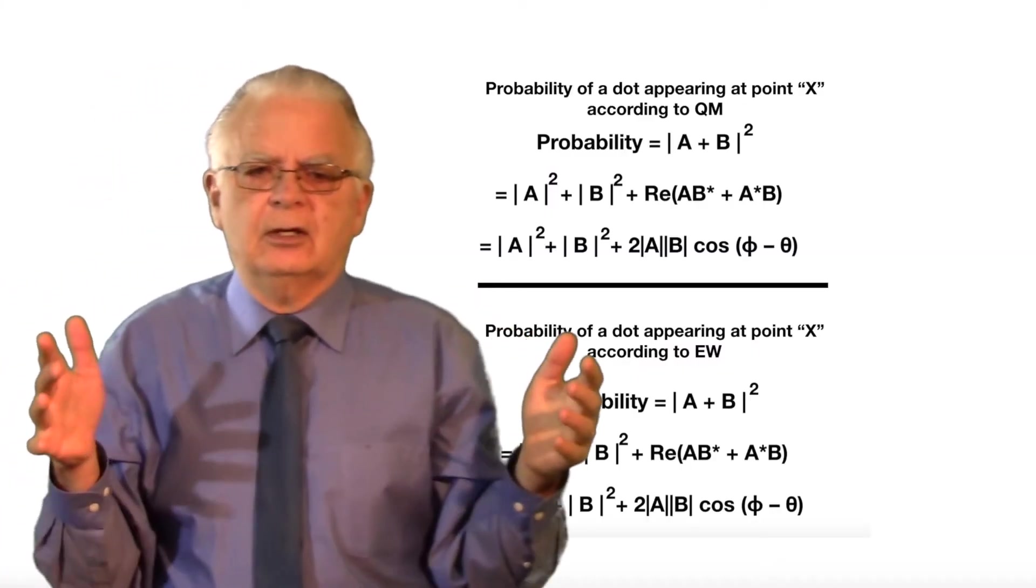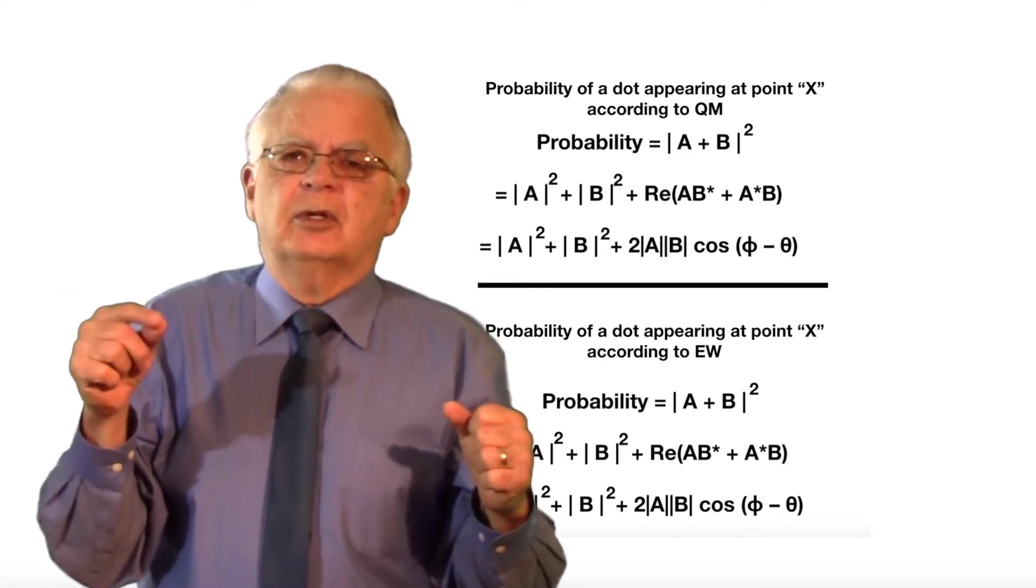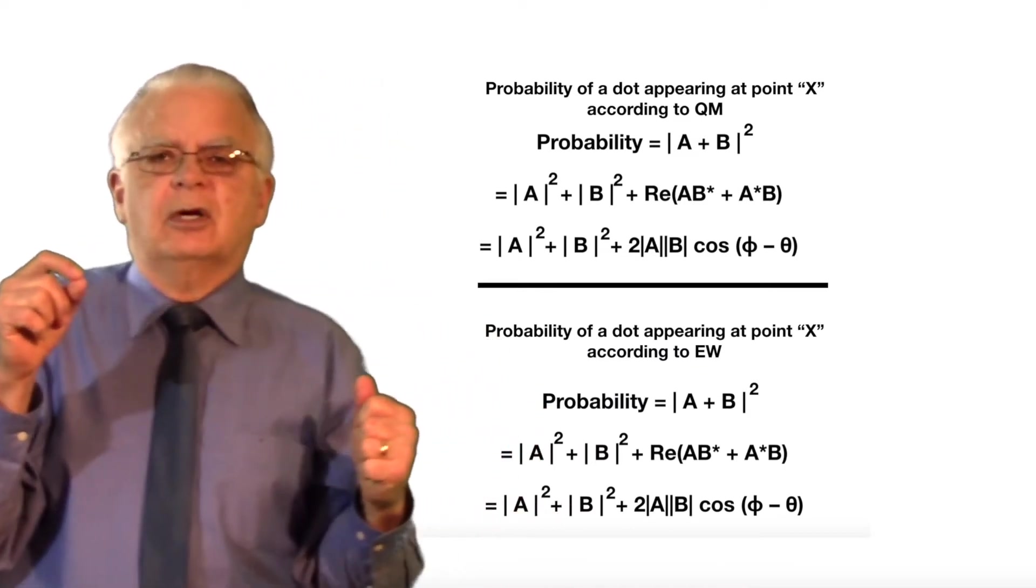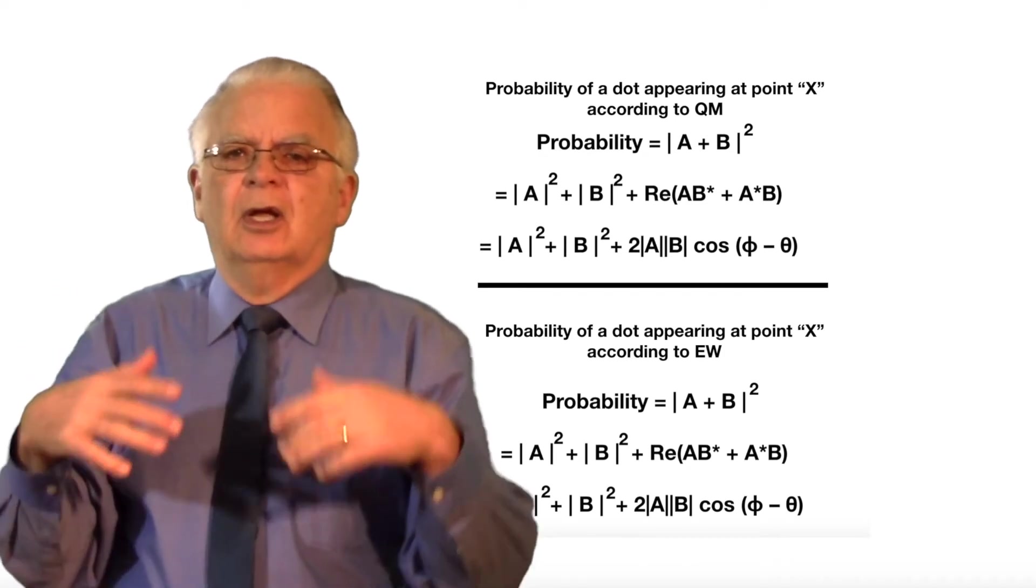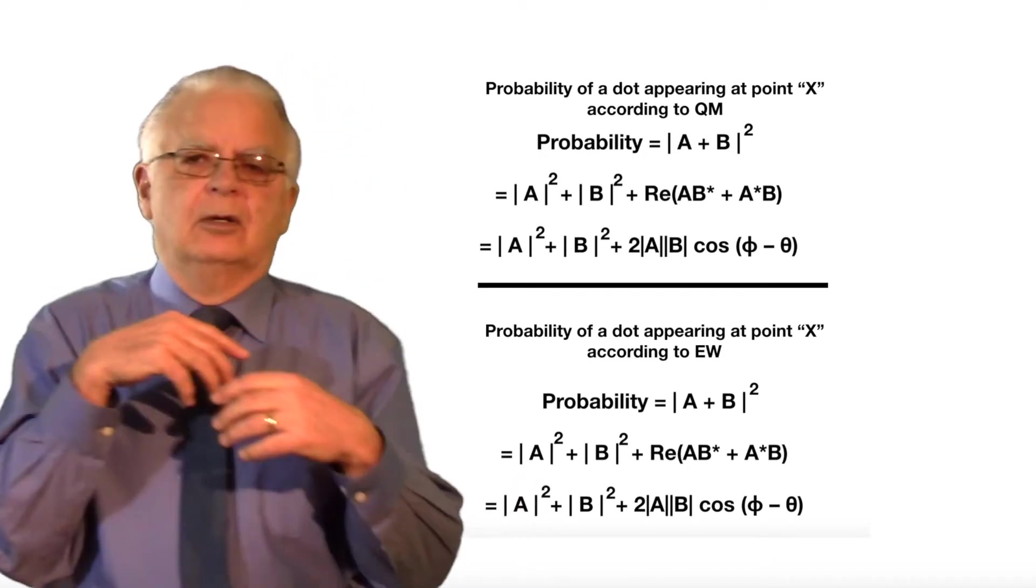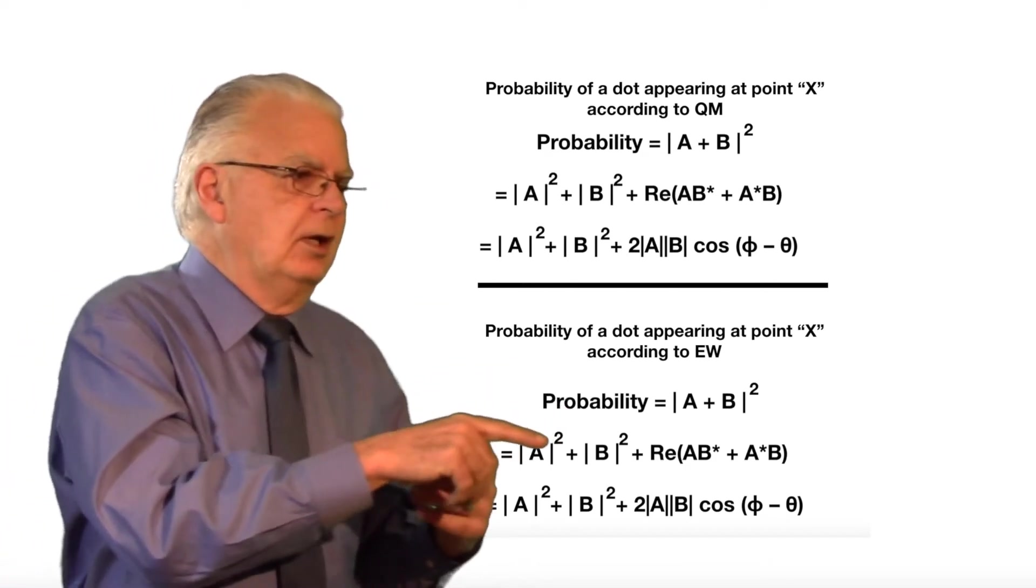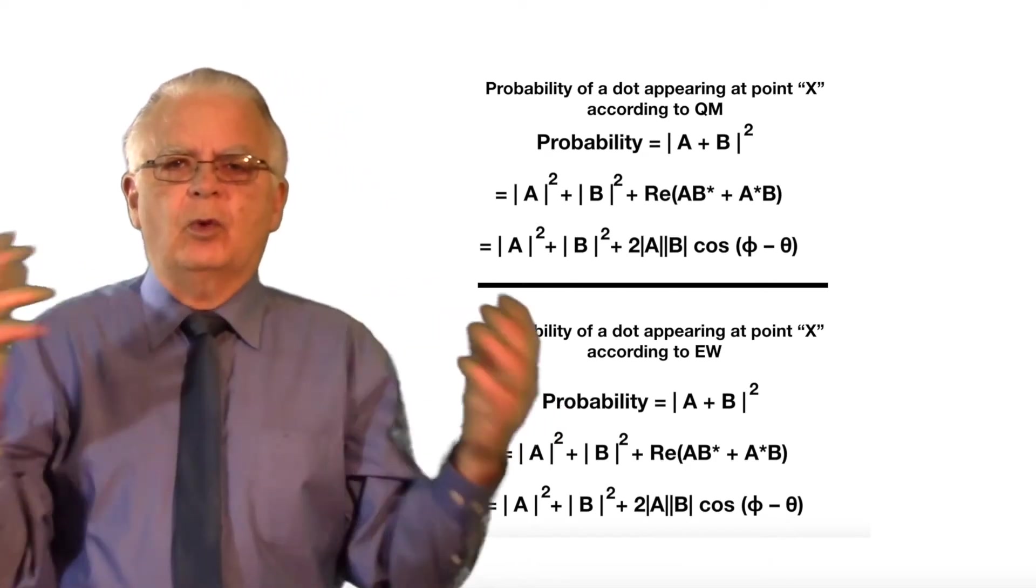So this slide here shows on the top part of the slide the probability of point X appearing on the target screen according to quantum mechanics. And the lower part of the screen with exactly the same mathematics shows the probability of a particle hitting the target screen at point X according to elementary wave theory.